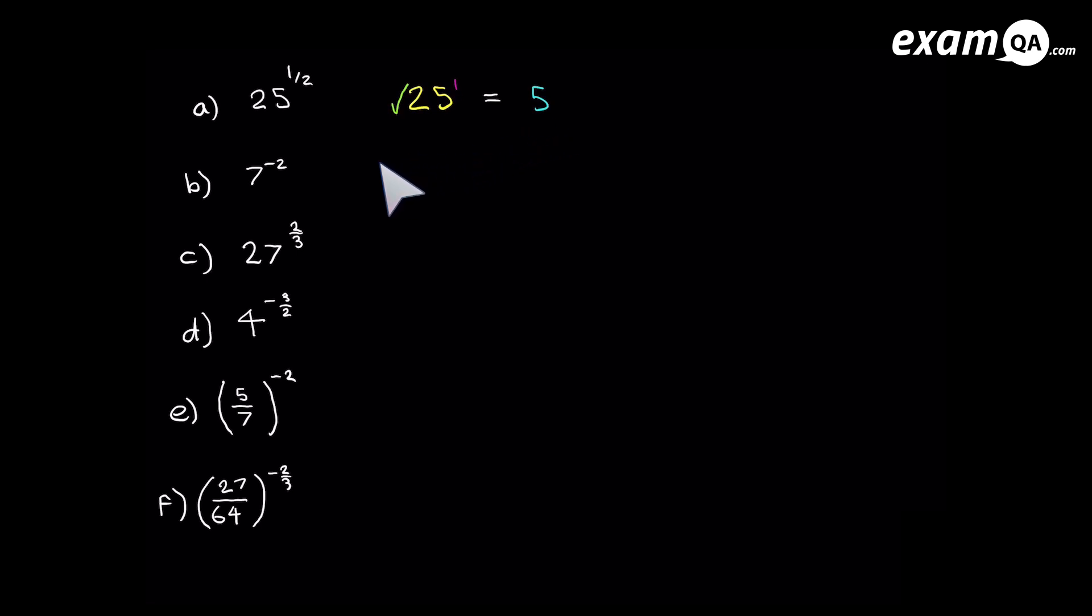So let's look at the next example. We have 7 to the power of negative 2. If it was 7 to the power of 2 it would just simply be 7 squared which is 49. But here we've got a minus 2. Now all the minus does is it makes it 1 over. So you can simply rewrite it as 1 over 7 to the power of 2. And of course, 7 squared is 49.